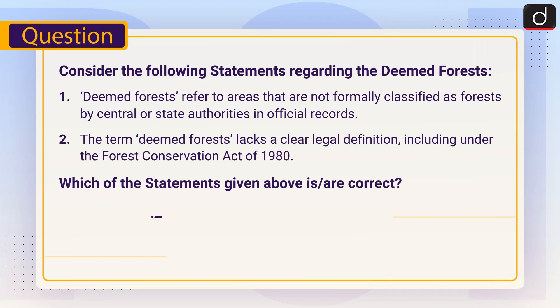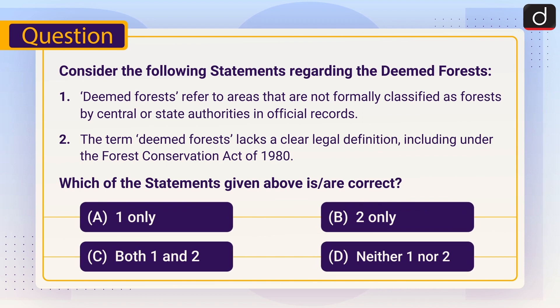Now it's time for the practice question. Consider the following statements regarding deemed forests. One: deemed forests refer to areas that are not formally classified as forest by central or state authorities in official records. Two: the term deemed forest lacks a clear legal definition, including under the Forest Conservation Act of 1980. Which of the statements given above is or are correct — one only, two only, both one and two, or neither one nor two? Send your answer in the comment section.